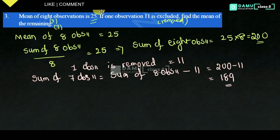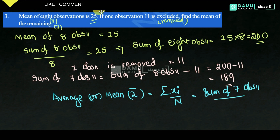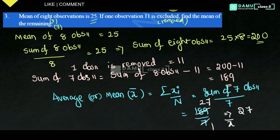So we got 189. Now average of remaining, or mean, will be equal to x-bar. x-bar equals summation of xi by n. Here n is 7, so that is sum of 7 observations divided by 7, which is 189 divided by 7. 7 twos are 14, 7 sevens are 49 — so x-bar equals 27. The average of the 7 remaining observations is 27. Thanks for watching, please subscribe.